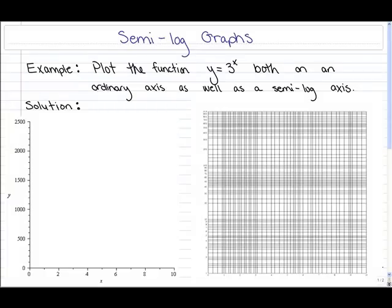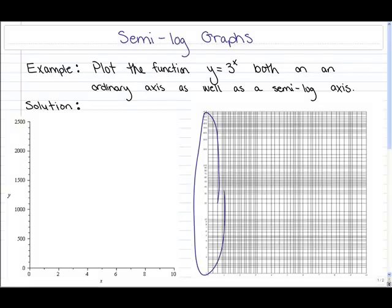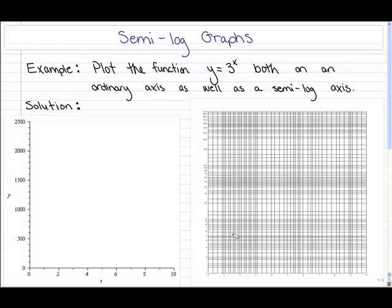In a semi-logarithmic graph, one axis has a logarithmic scale and the other axis has a linear scale. So this is a semi-log graph on my right-hand side. The x-axis here is a linear scale whereas the y-axis here is a logarithmic scale, hence the name semi-log graph. The idea is that we can more easily see details for the small values of y as well as the large values of y, and it also saves you from having to convert your data to logs before plotting, which reduces the chances of making a mistake.